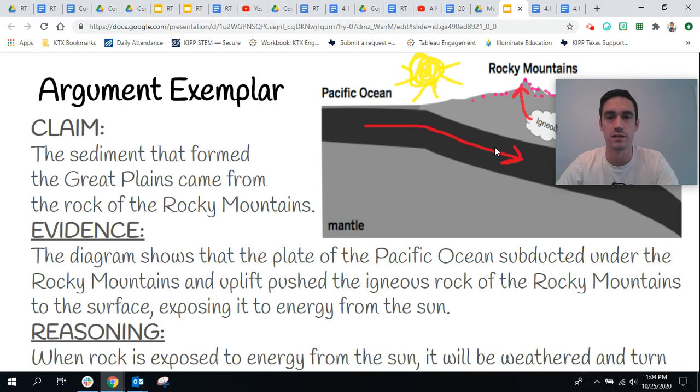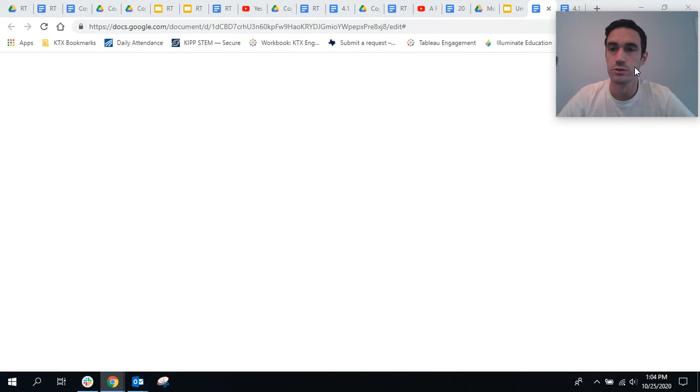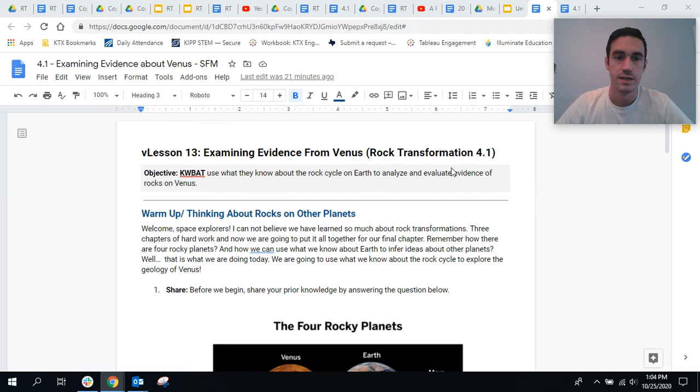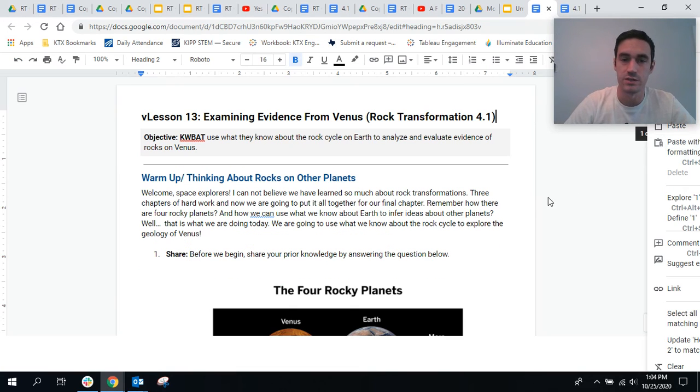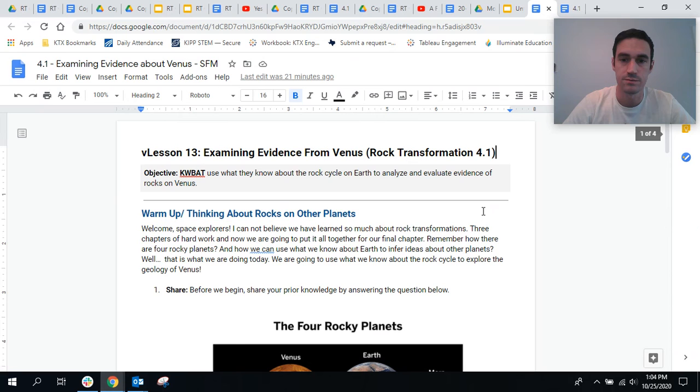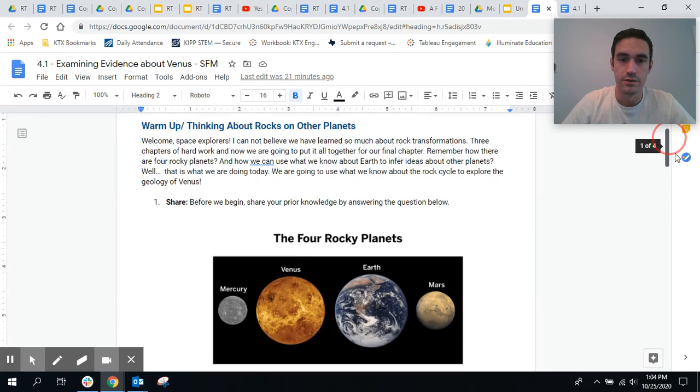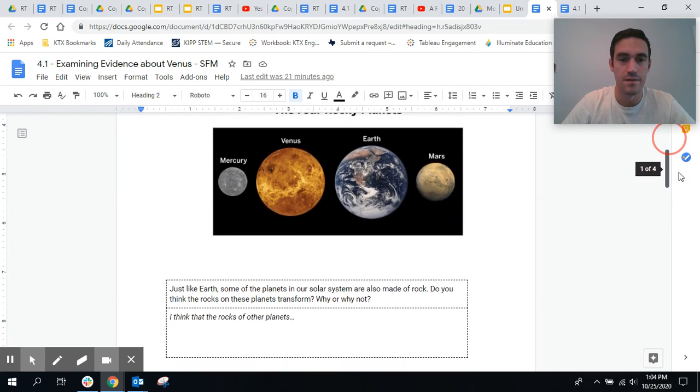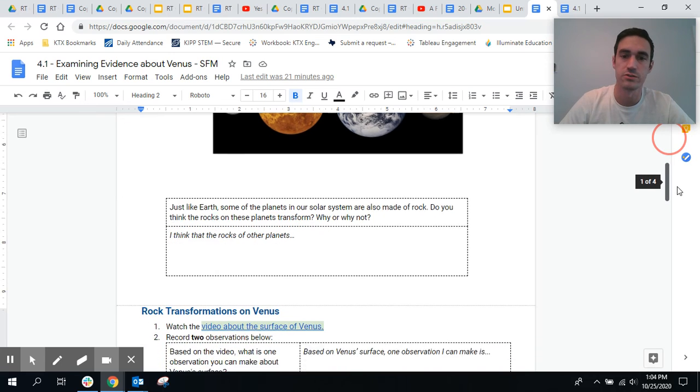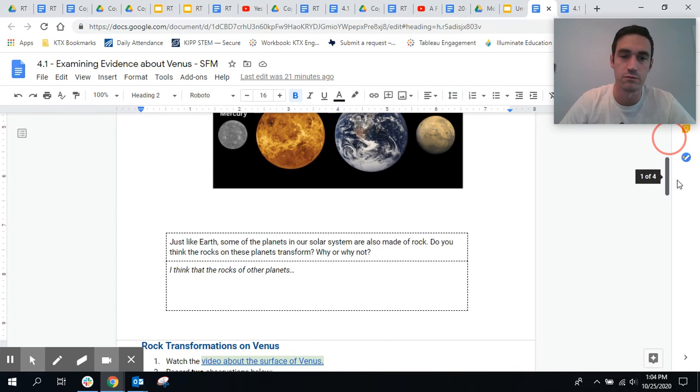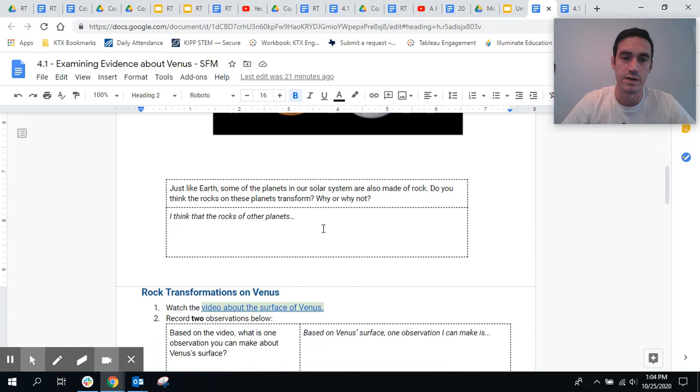So what I am going to take a look at next is our work for today. What you're going to do as your do-first today is start off by reading this very top section where it says warm up and thinking about rocks. You can take a look at this picture here. And then just like Earth, some of the planets in our solar system are also made of rocks. So do you think that rocks on these planets transform? Why or why not? I want you to go ahead and write that in right here.